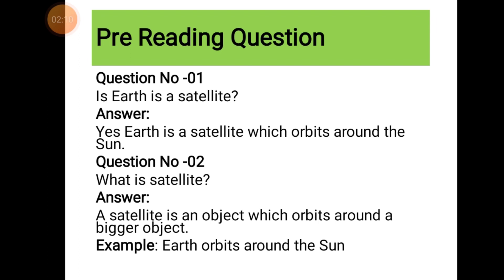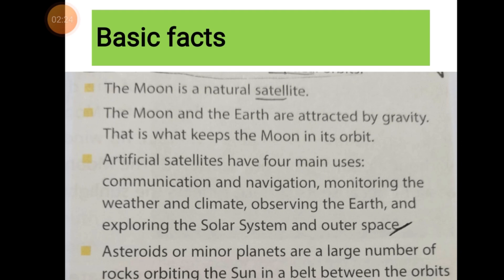Like Earth orbits around the sun. Now students, it's time for reading — page number 133, Basic Facts. The moon is a natural satellite. Students, satellites have two types: one, natural, and second, artificial satellites.